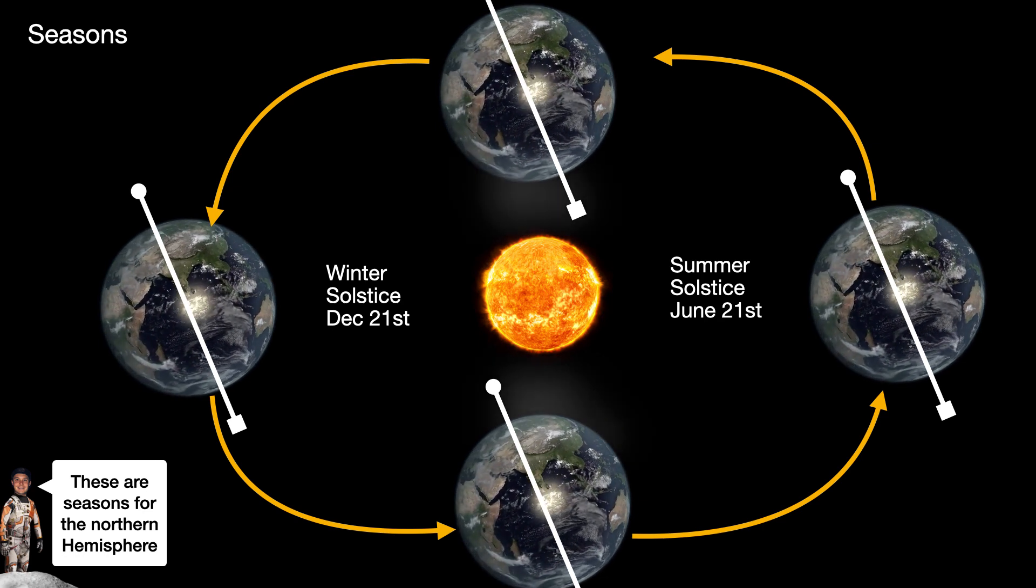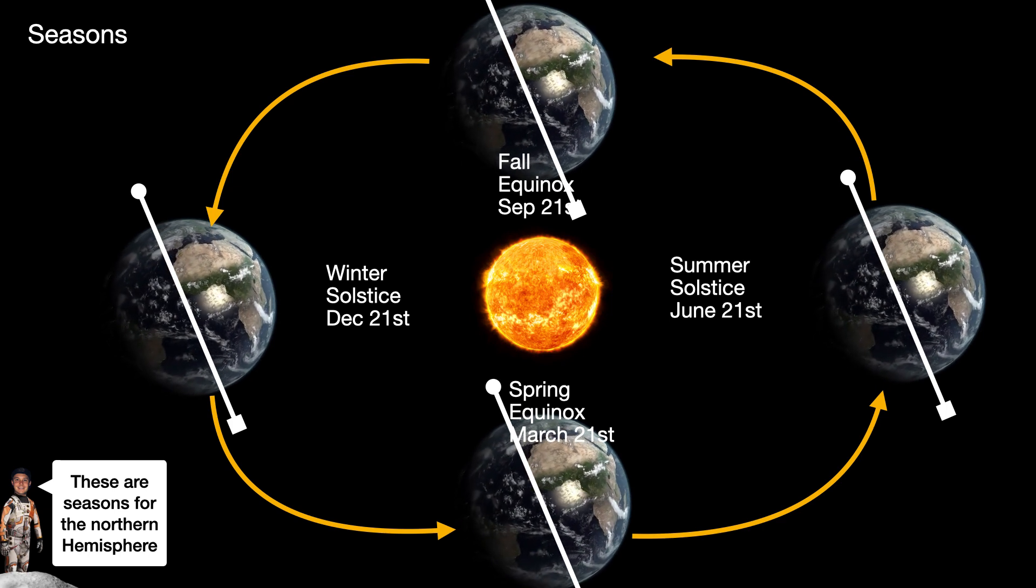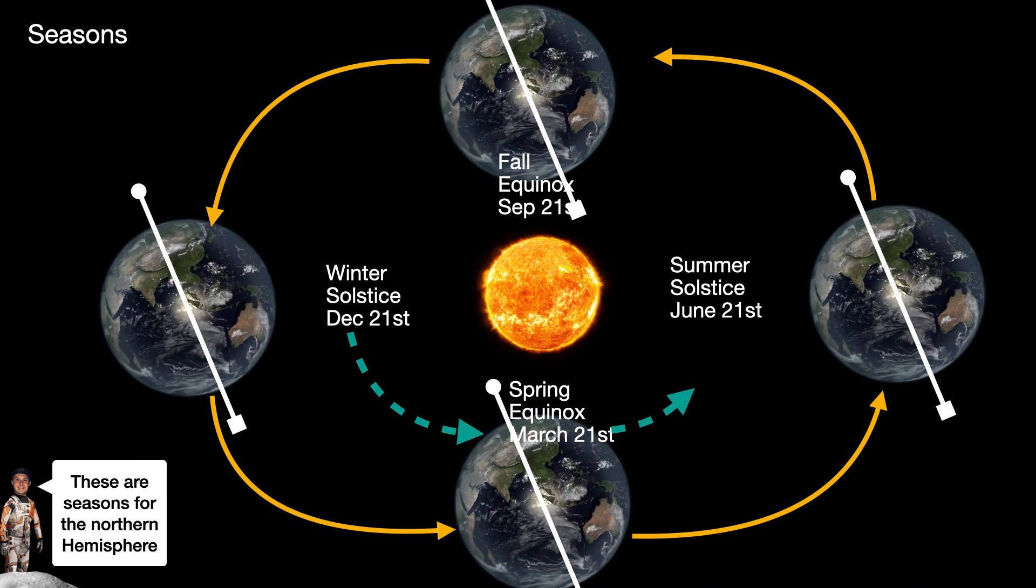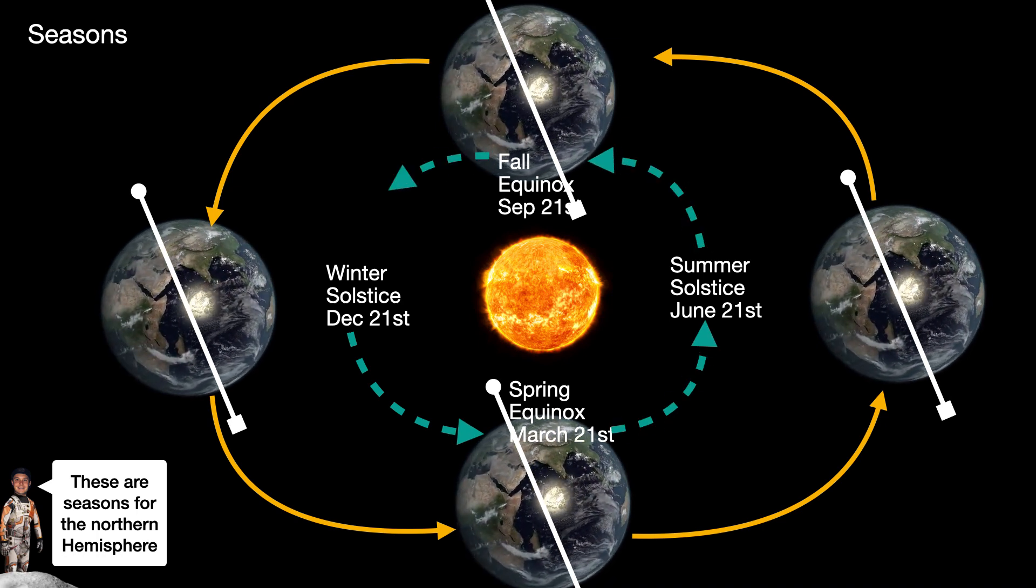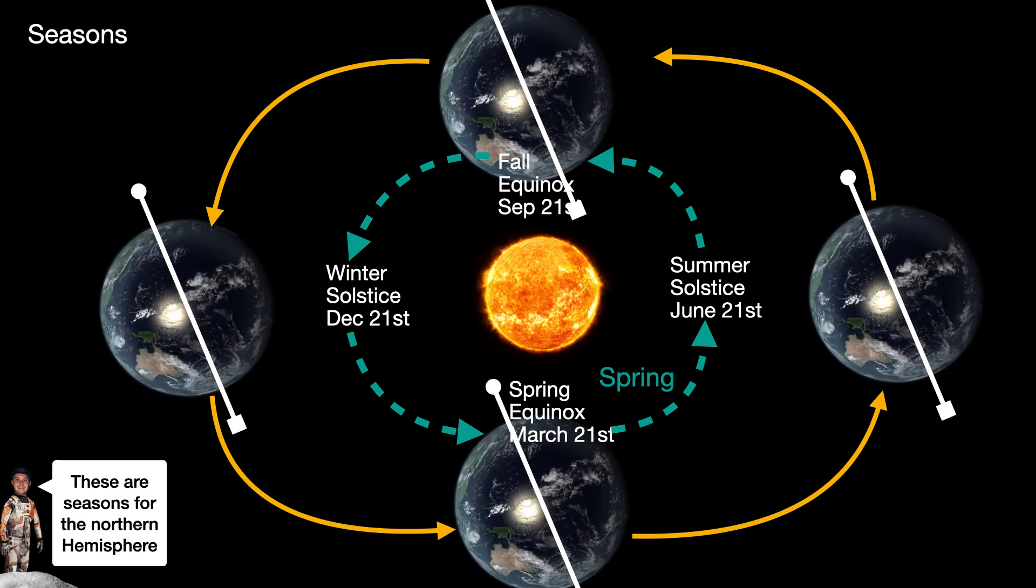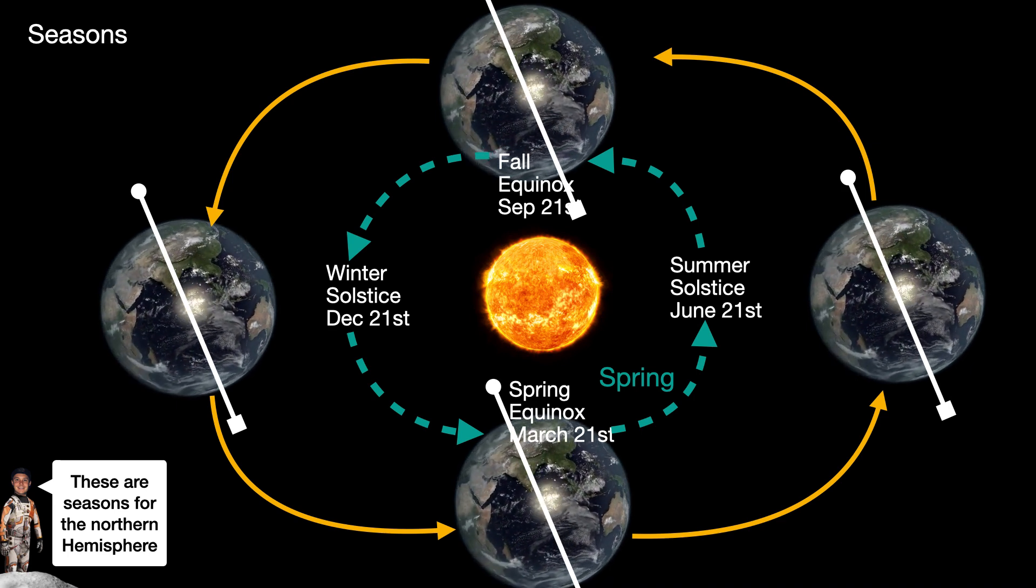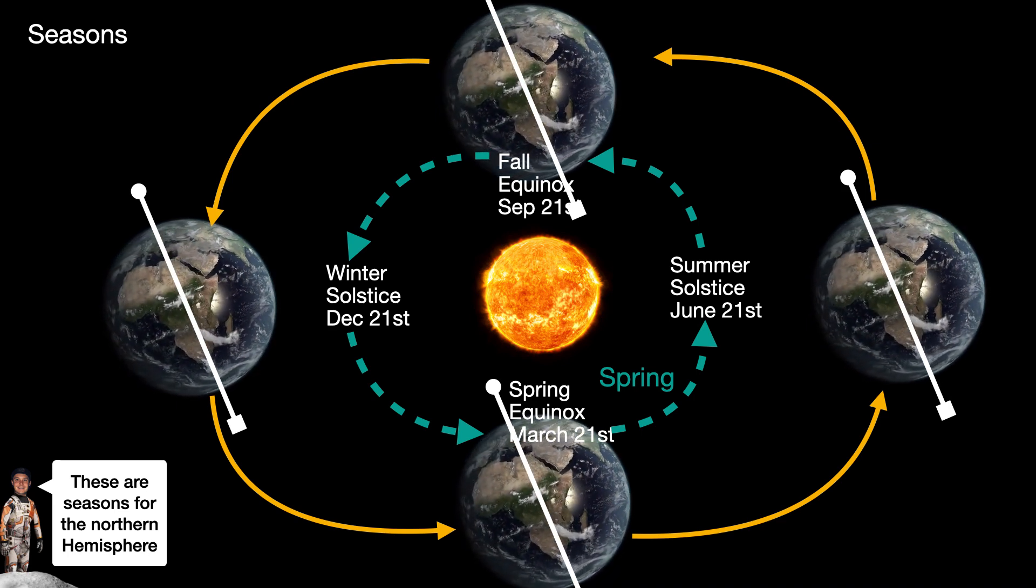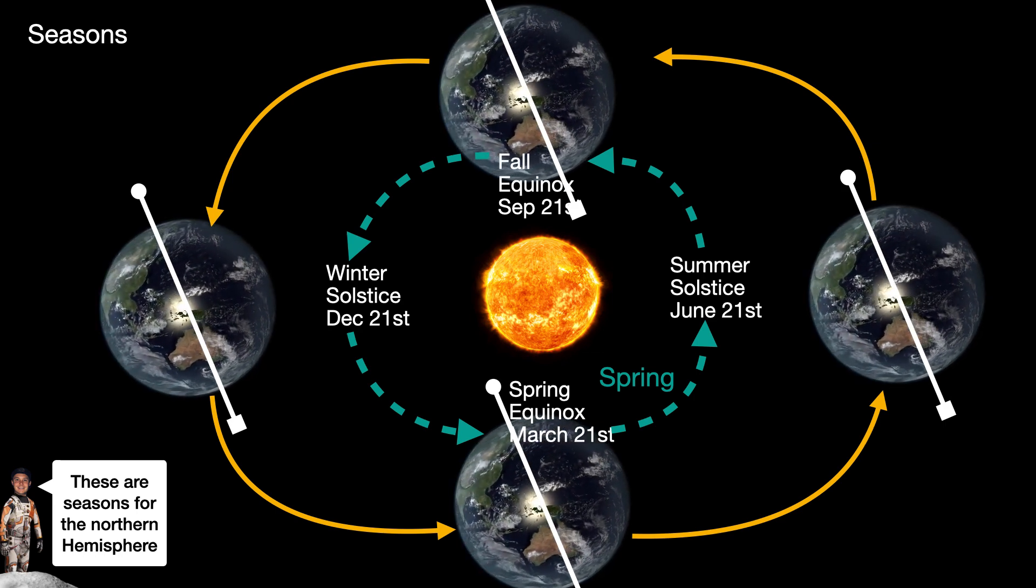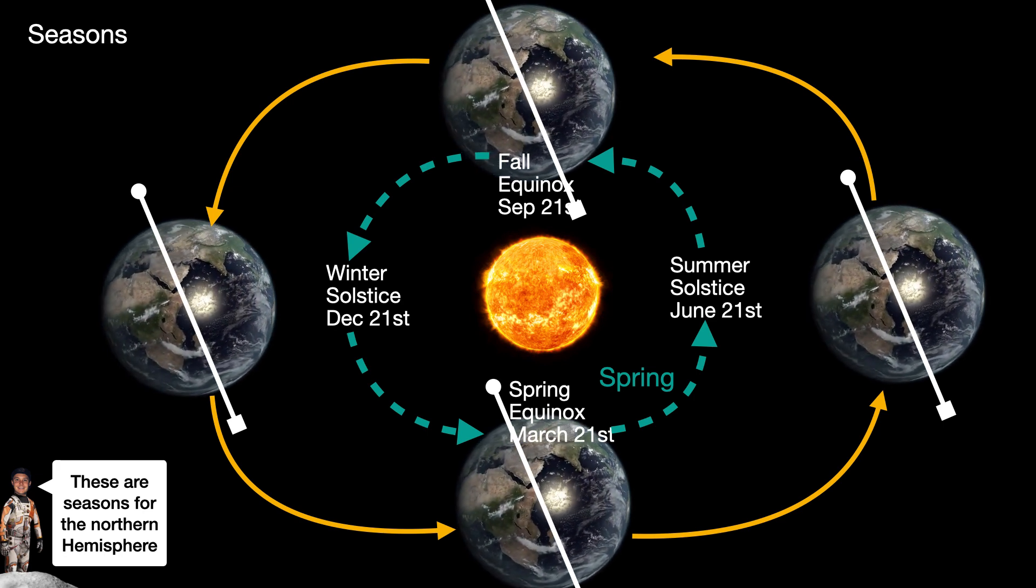In between these two times, you have the fall equinox and the spring equinox, which are the days where you have exactly equal day and night. So over the course of the entire year, we have our progression of the seasons, but we also change the amount of daylight we get every single day by a couple of minutes. You maybe don't notice this from day to day, but after a couple of weeks or months, it's easy to tell that we are either increasing our sunlight in the spring and summer, and decreasing our sunlight in the fall and winter, and repeating that cycle every year.